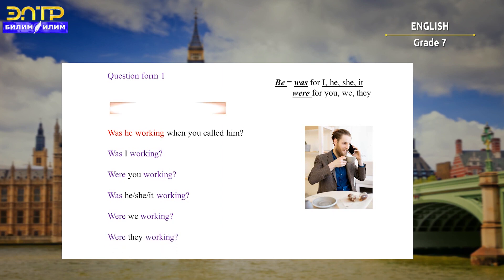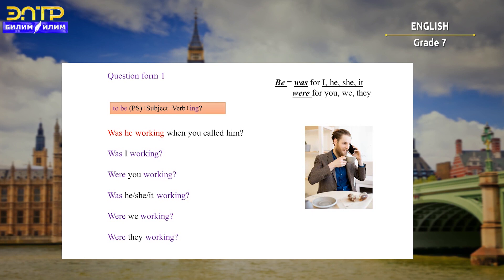Here is the formula for building a question without a question word: To be in past simple + subject + verb with ING + question mark.